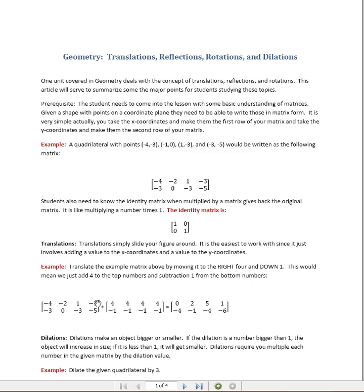We have our original matrix here from the 4 points, and remember that the top row deals with the x coordinates. The x coordinate deals with moving right and left. So if we want to go right 4, that would be a positive 4. So we want to add 4 to each of these values of the top row, the x coordinates.